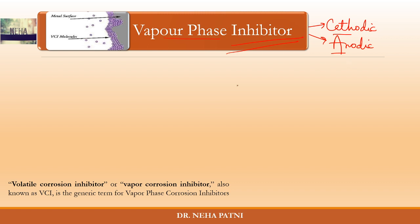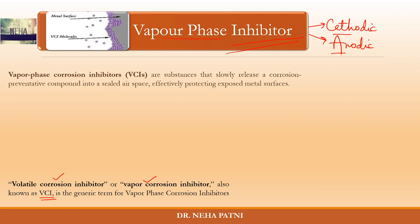In texts, you may find that the other name for vapor phase inhibitor could be volatile corrosion inhibitor or vapor corrosion inhibitor. It is generally referred to as VCI, which is the generic term for vapor phase corrosion inhibitor. So what we are going to talk about today is VCI — that is, vapor phase corrosion inhibitor.